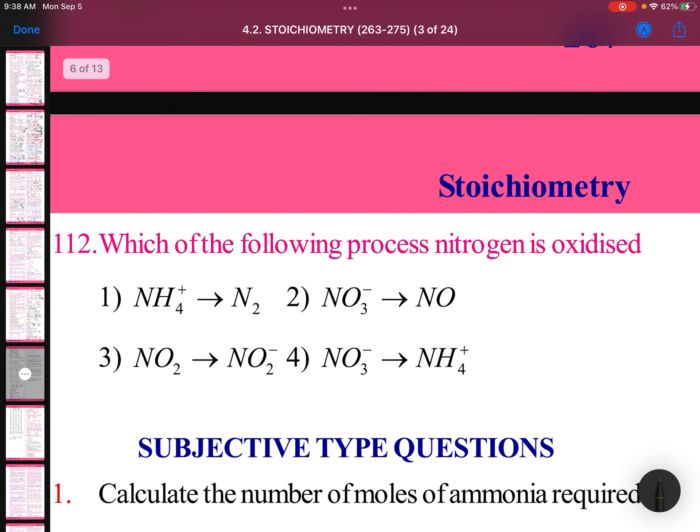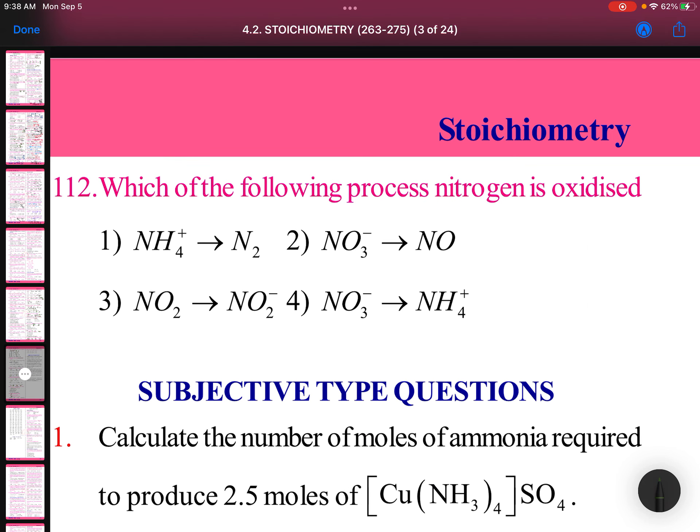Which of the following processes: nitrogen is oxidized. Oxidized means oxidation state should increase. NO3 minus plus 5, this is minus 3, it is reduction. NH4 plus, this is minus 3, it is 0. Increase in oxidation state is oxidation.